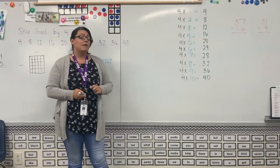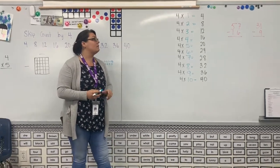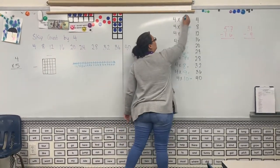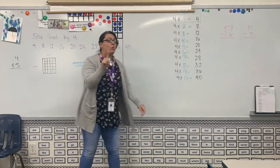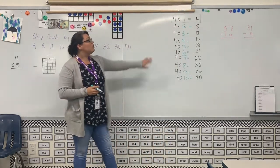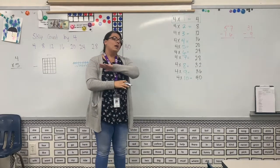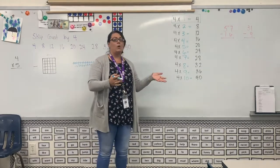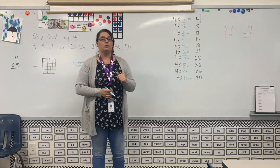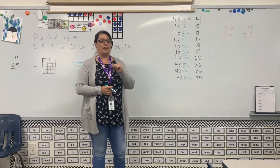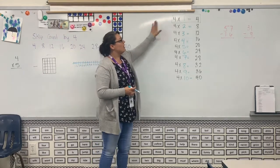And if you remember last week we've already talked about ones. So anything times one equals itself. So 4 × 1 is 4, 3 × 1 is 3, 2,785 × 1 is 2,785. So we know that.